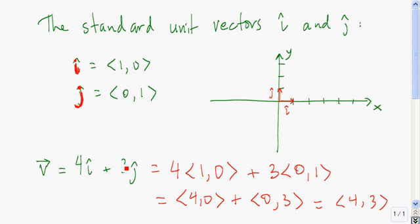So the vector 4i plus 3j, we just go 4 units in the x-direction and 3 units in the y-direction.